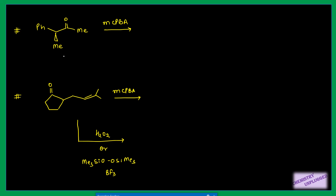For optically active carbon centers, their configuration will be retained during migration. For example, if you are doing Baeyer-Villiger reaction on a ketone where one carbon is a chiral secondary carbon, the preference will be given to the electron-rich secondary carbon for migration. When it migrates, oxygen is inserted in between the ketone and that carbon, but the configuration of that carbon is retained during migration. This is an important point — remember that configuration is retained.